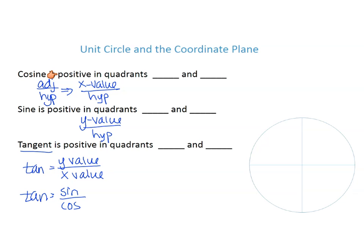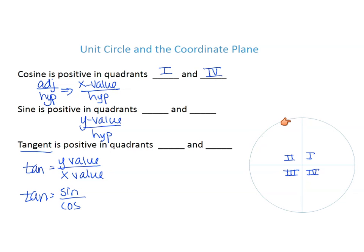For cosine, the hypotenuse is always positive, so we just look at where the numerator — the x value — is positive. X values are positive when we go to the right, so cosine is positive in quadrants one and four. Remember, quadrants are numbered one, two, three, four. For sine, it's positive anytime my y value is positive, meaning any time we move up — so sine is positive in quadrants one and two.